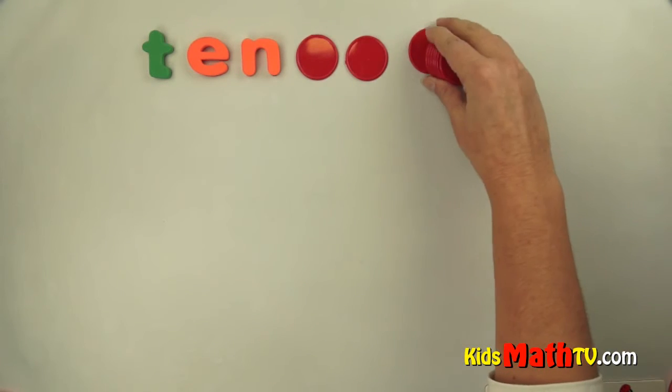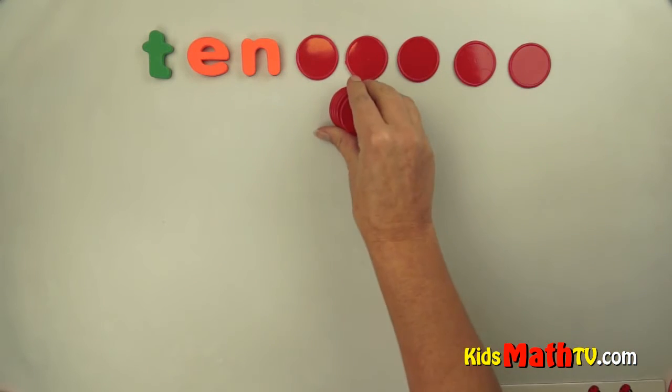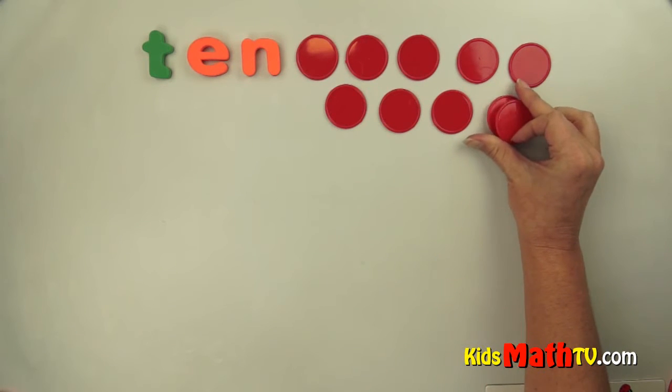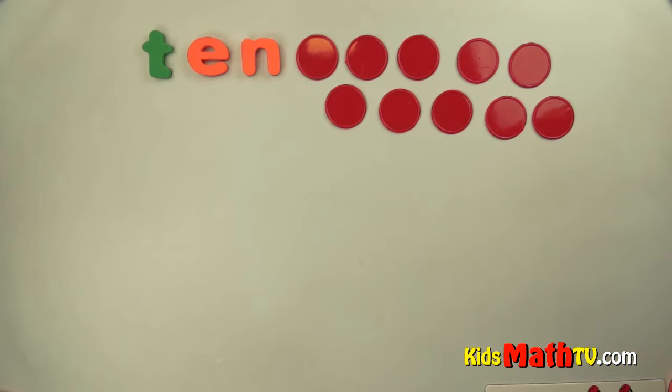1, 2, 3, 4, 5, 6, 7, 8, 9, 10. There are 10 red circles.